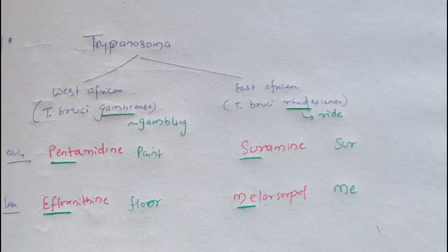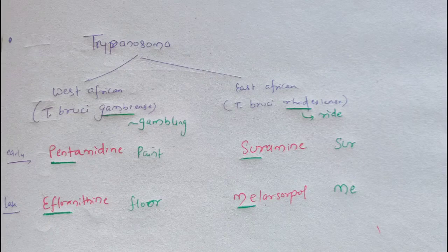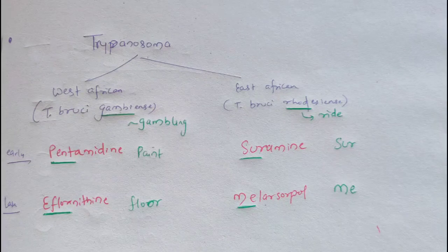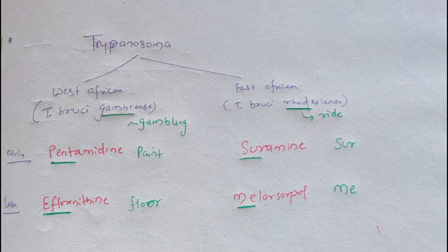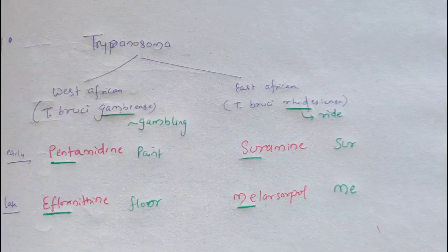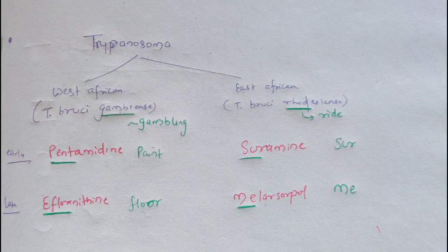For West African sleeping sickness, in the early phase pentamidine is used, and in the late phase — when CNS manifestations start — eflornithine is used. The mnemonic: gambling is done in big clubs with beautiful paintings and beautifully painted buildings. So 'paint' stands for pentamidine, and 'floor' stands for eflornithine.